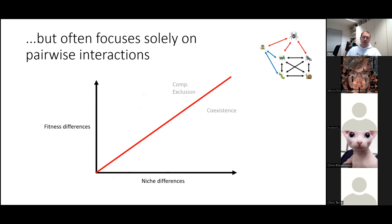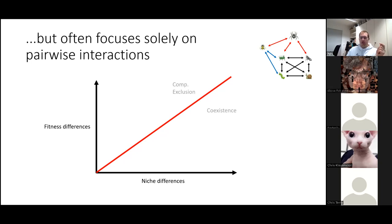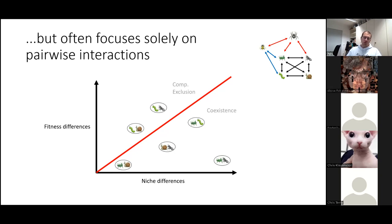There is a problem with modern coexistence theory. The typical approach has two lines of thought: niche and fitness differences — which I'll mainly focus on — and relative non-linearity and storage effect. To understand this community, scientists would analyze niche and fitness differences. What's typically done is taking a species pair, such as the ant and the caterpillar, computing their niche and fitness differences, getting one dot on our graph, and continuing to add other species pairs.